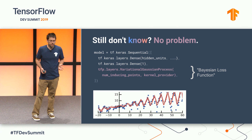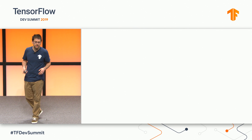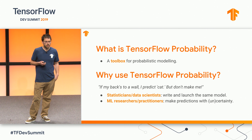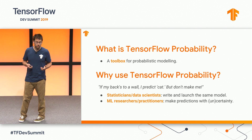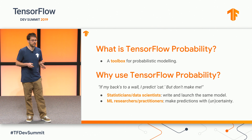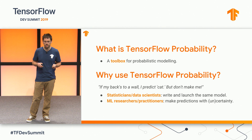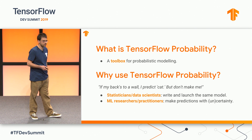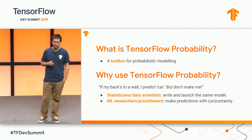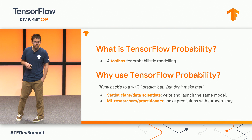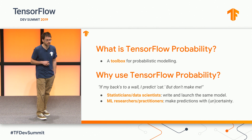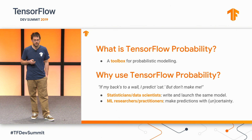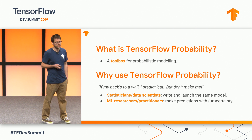So how can this all be so easy — how did it all fit together with TensorFlow Probability? TFP is a collection of tools designed to make probabilistic reasoning in TensorFlow easier. It won't make your job easy — it'll give you the tools to express the ideas you have. You still need domain knowledge and expertise, but you can encode that in a probabilistic formalism. Statisticians and data scientists will be able to write and launch the same model, gone are the days of hacking your model in R and importing it to C++ or TensorFlow. ML researchers and practitioners will be able to make predictions with uncertainty — if you predict the light is green, you better be confident you should go.